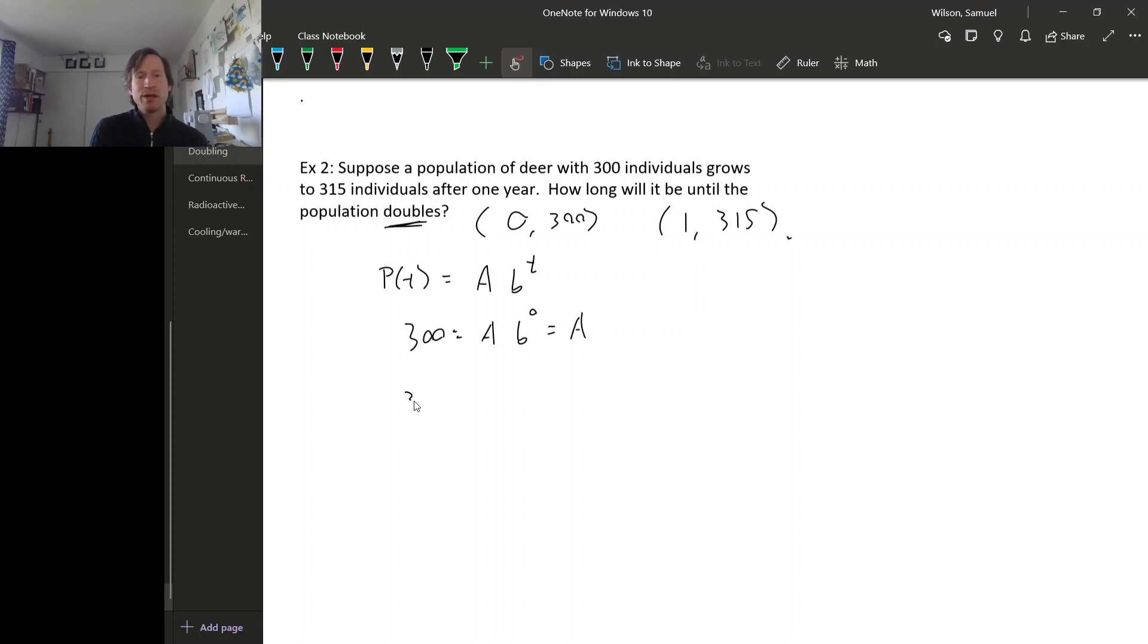Plugging in the second data point we get 315 equals A, which we already know is 300, times B to the first power, and that means that B is 315 over 300. So our population function is 300 times 315 over 300. This fraction reduces, so 315 over 300 is 21 over 20. So 21 over 20 to the T.